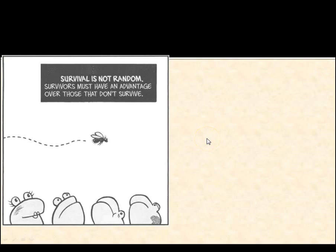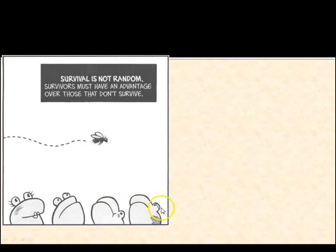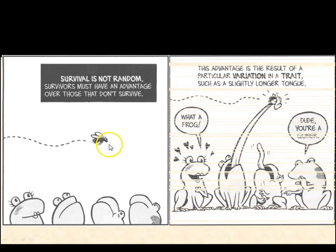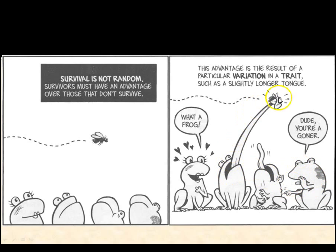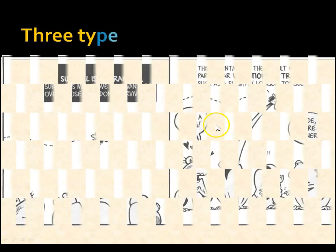But survival is not random — I'm going to stress this a lot, because evolution is not a random process. The mutation is random, the crossing over is random, the sexual recombination is random. But the survival is not. We have three frogs here, we have one fly — there's not enough. The music has stopped. Who gets it? The one with the longest tongue. It's only the fittest. The variation that gives you the best advantage is the one that reproduces.